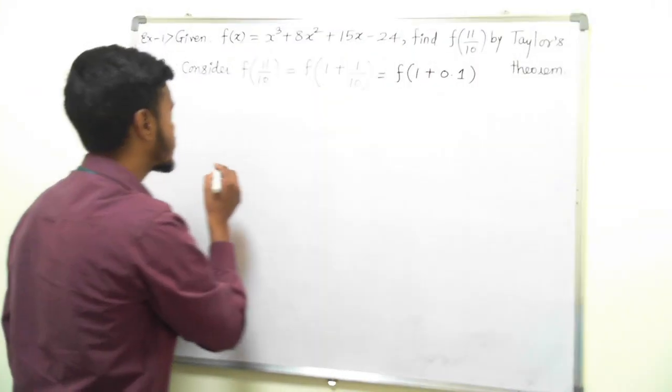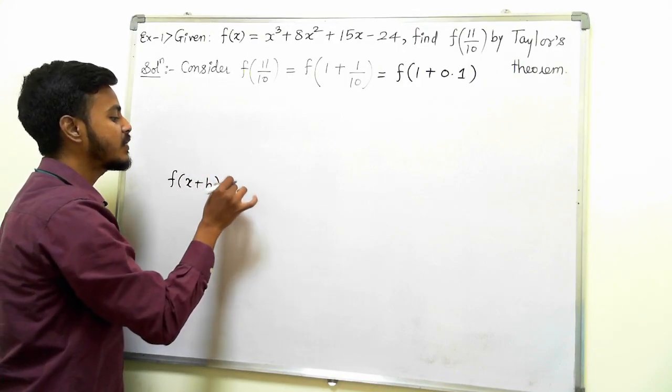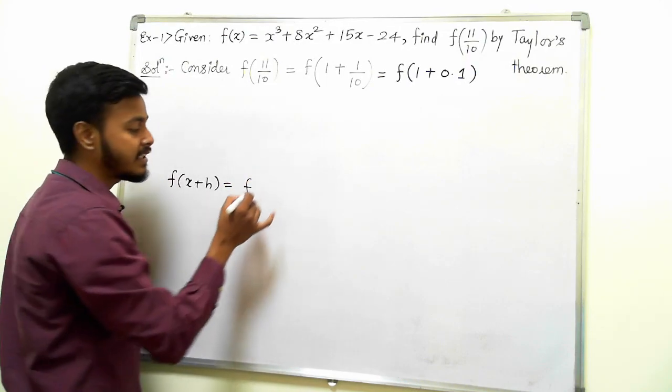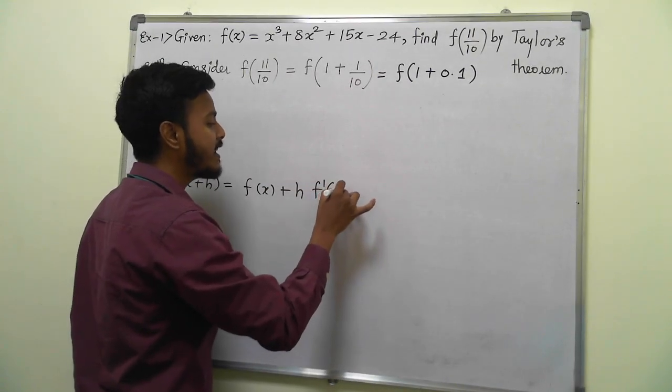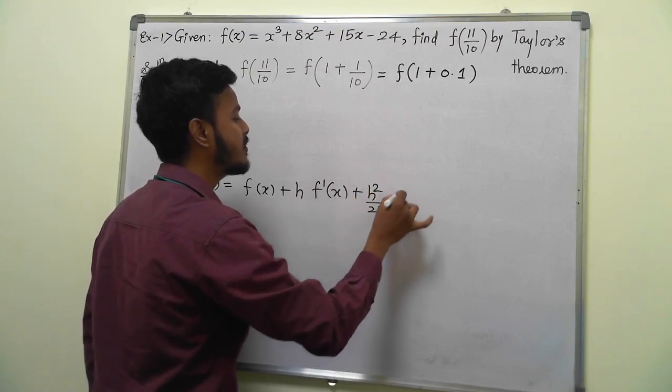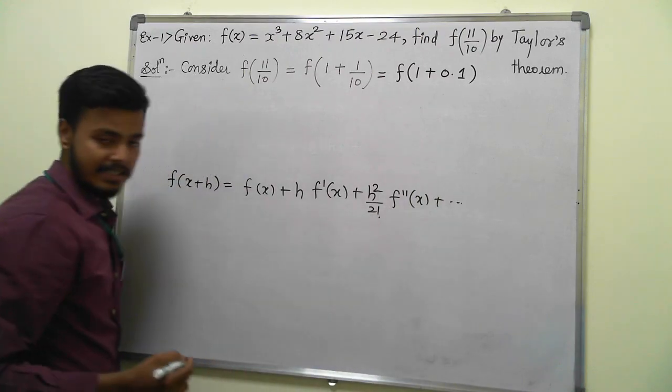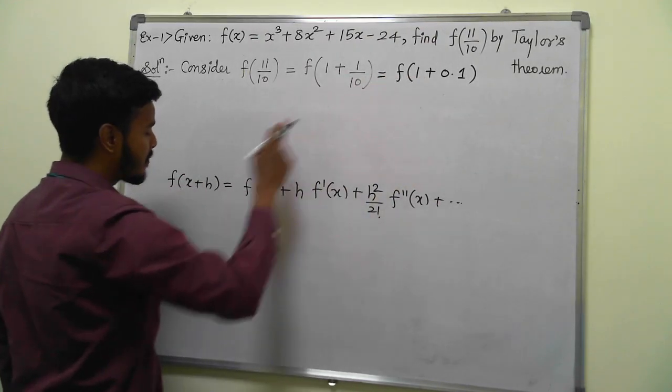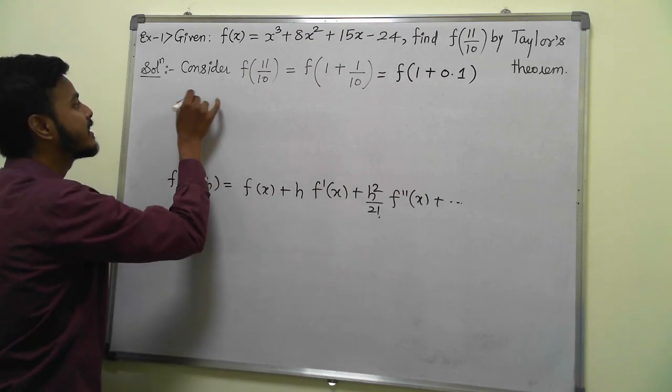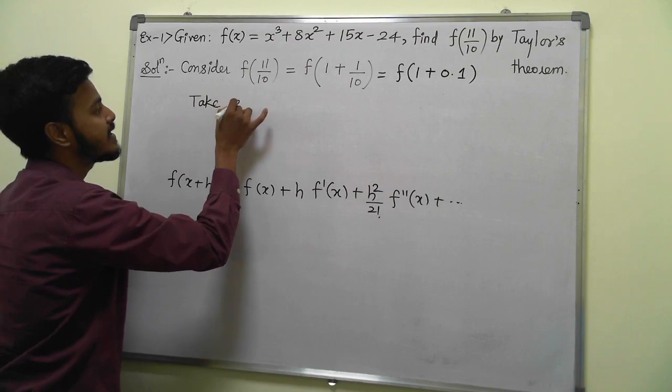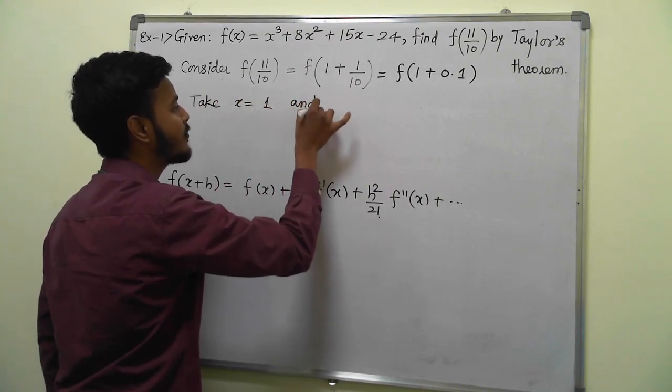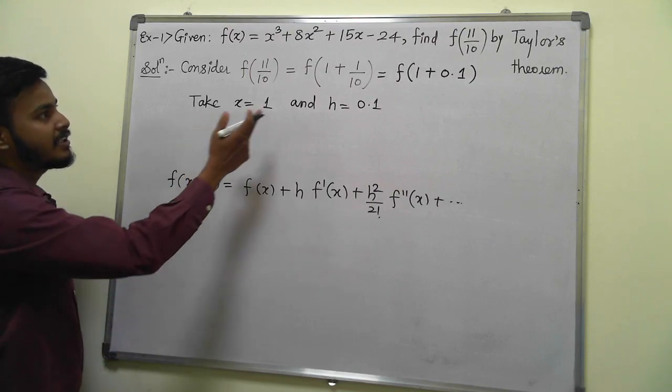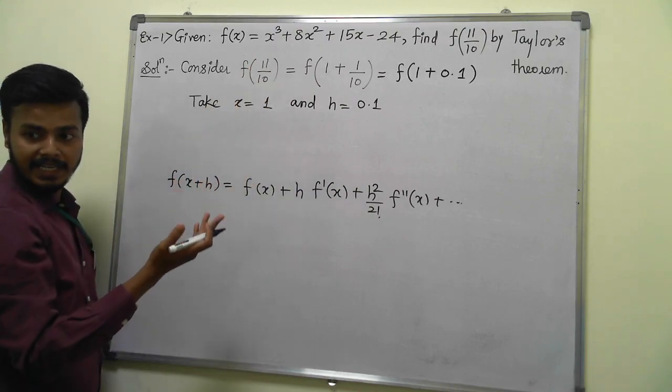The Taylor series expansion in terms of h is: f(x+h) = f(x) + h·f'(x) + (h²/2!)·f''(x) and so on. So we have f(x+h). What value of x can we take? Correct, take x = 1. And what value for h? The simple answer is 0.1. Now we want to expand this function as f(x+h), which will be f(11/10).